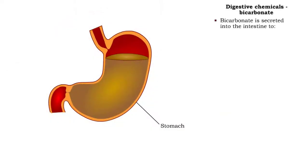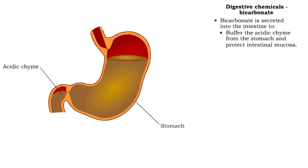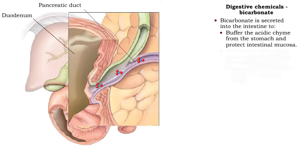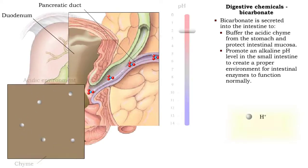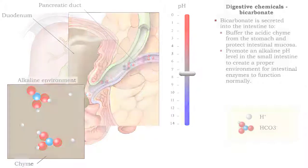Bicarbonate is secreted into the intestine to buffer the acidic chyme from the stomach and protect intestinal mucosa. It also promotes an alkaline pH level in the small intestine to create a proper environment for intestinal enzymes to function normally.